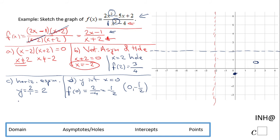Now we can move to the x-intercepts. x-intercepts means y equals 0. So 0 equals 2x squared minus 5x plus 2 over x squared minus 4.